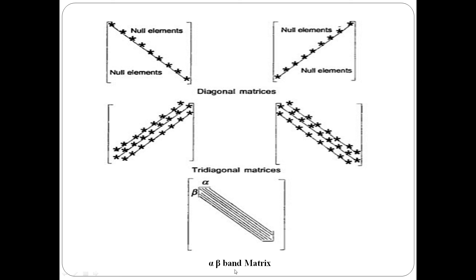Next is the alpha-beta band matrix. In comparison to a tridiagonal matrix where the remaining elements are zero, in the alpha-beta band matrix the band is wider — this is the alpha-beta band matrix.